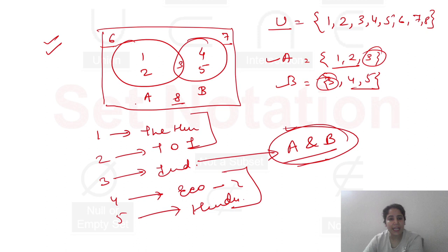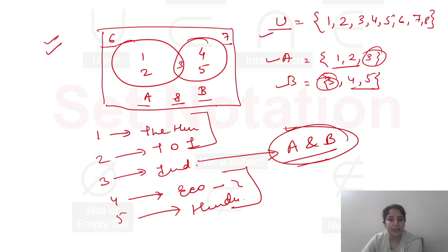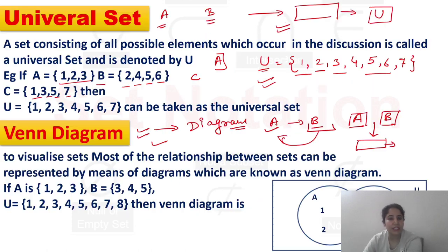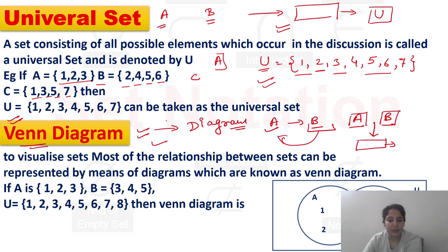तो यह element which is not available in A and B set but there in the Universal Set — इसको आप समझ गए होंगे। Venn Diagram — यह मैंने एक छोटा सा glance दिया है कि how can we visualize the Venn Diagram with the help of sets। लेकिन इनके relations अपन पढ़ेंगे next lecture में। Thank you so much, have a great day to all of you.